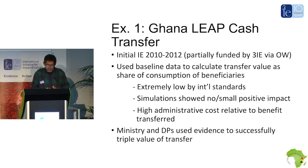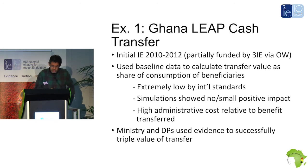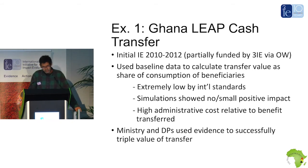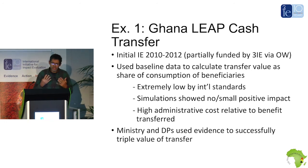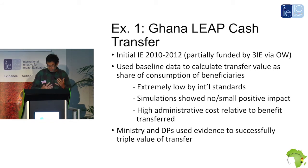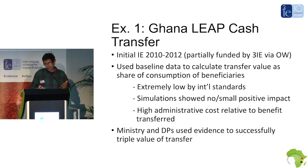The first example is the Ghana LEAP cash transfer. The initial impact evaluation ran from 2010 to 2012, partially funded by 3IE through their open window. The impact evaluation itself became a conduit to a more detailed exploration of operational issues around the LEAP program. What we showed right from the beginning at baseline was that the transfer value was way too low to have an impact.